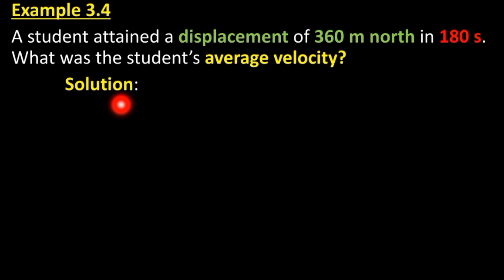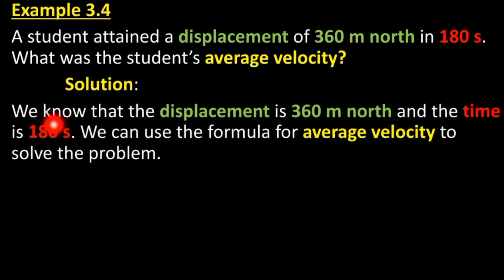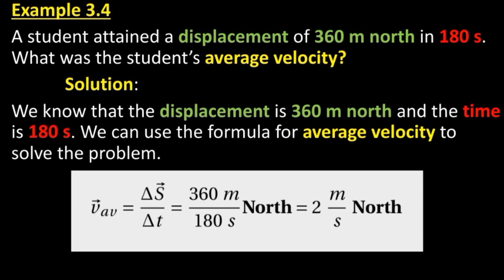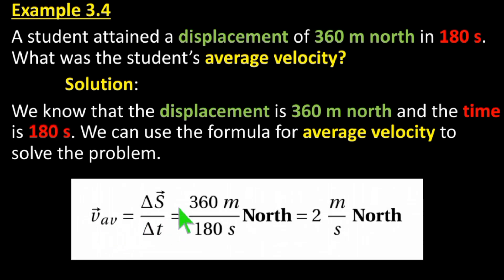Solution: We know that the displacement is 360 meters north and the time is 180 seconds. We can use the formula for average velocity to solve the problem. Average velocity is equal to the change in displacement over the change in time.